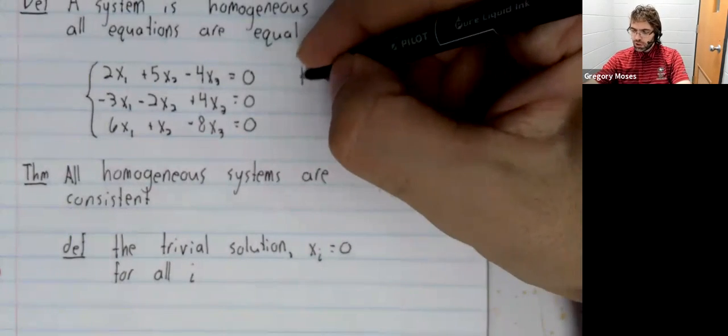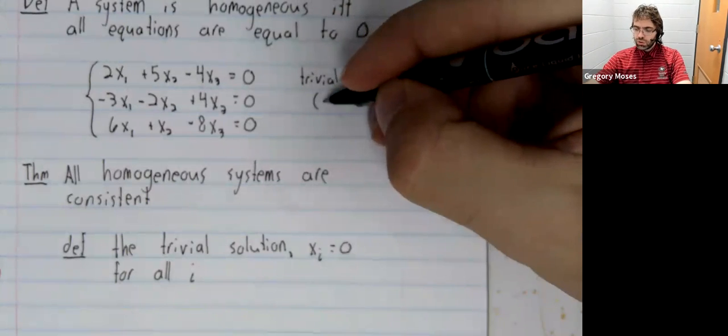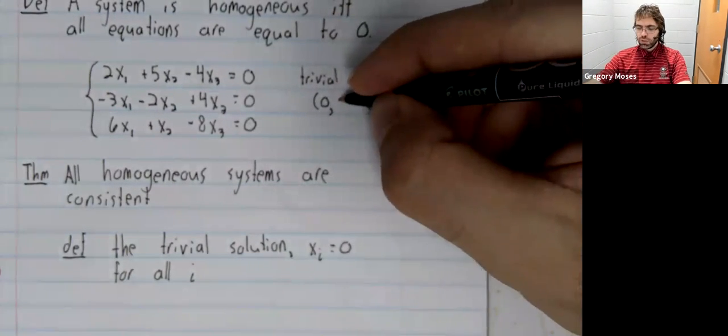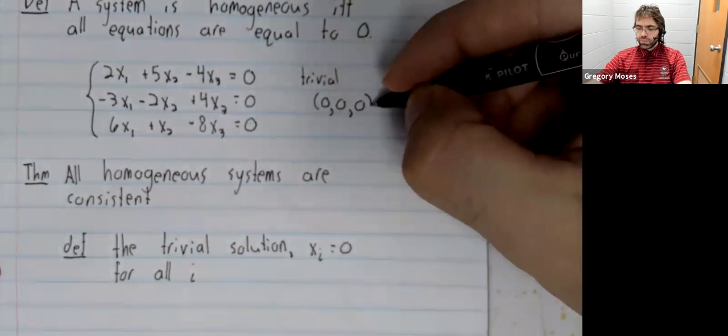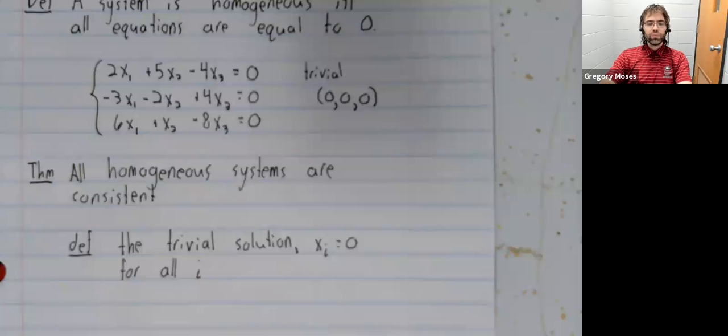So up here, the trivial solution would be x1 equals zero, x2 equals zero, x3 equals zero. And that is a solution.